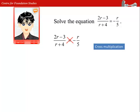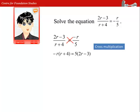One thing to note here is that the negative sign on the right hand side can follow the r or the 5. In this case, we will let the negative sign follow the r. Doing cross multiplication, we get negative r times r plus 4 equals to 5 times 2r minus 3.